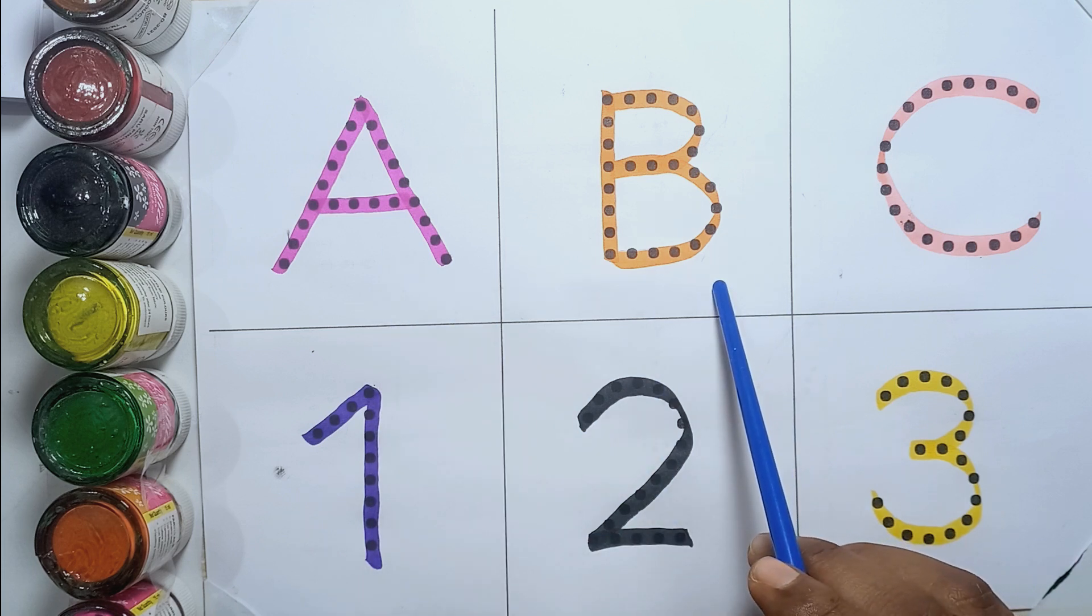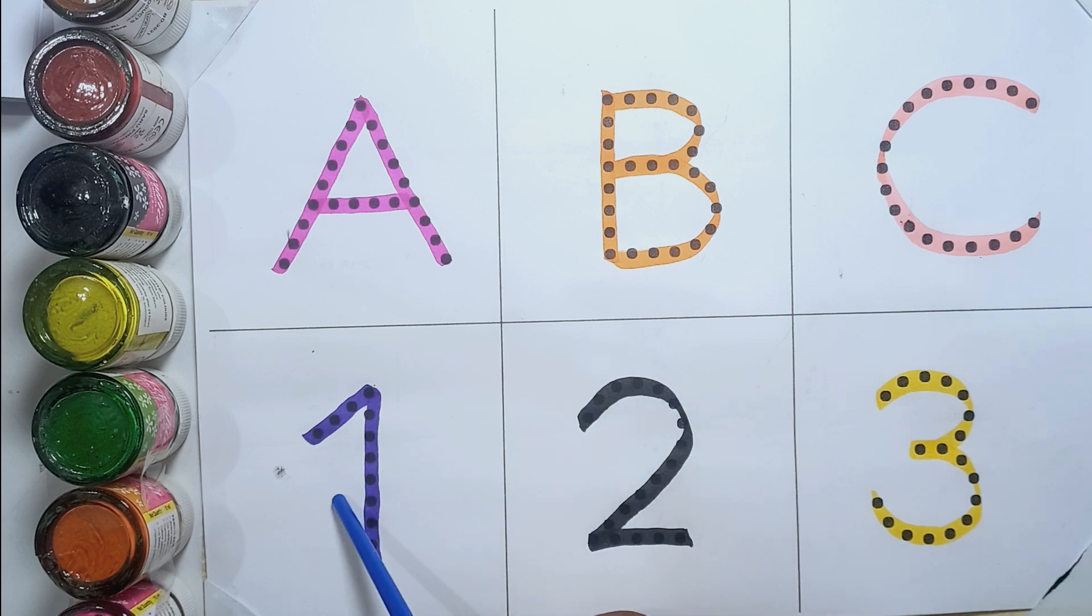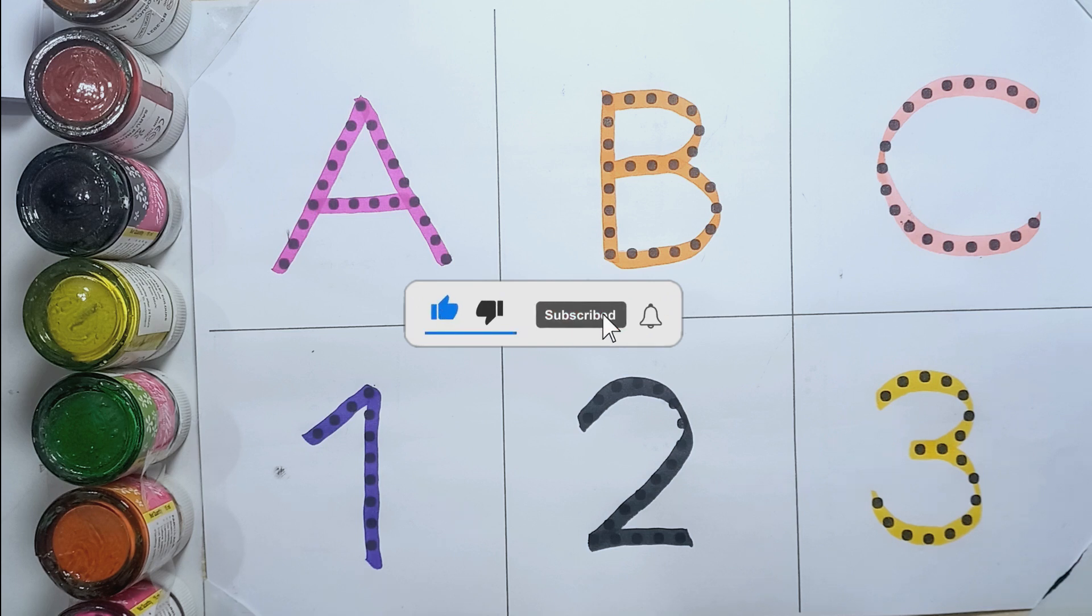A, A for apple. B, B for banana. C, C for cherry. One, two, three. Hello kids, please like this video and subscribe this channel. Thank you.